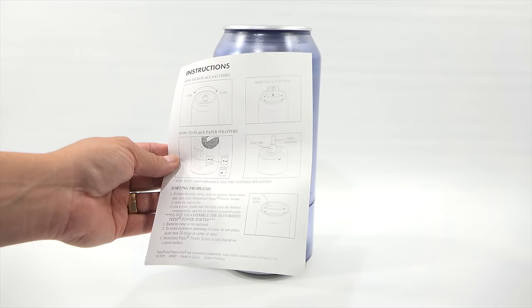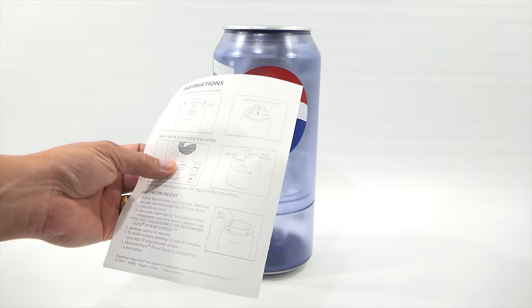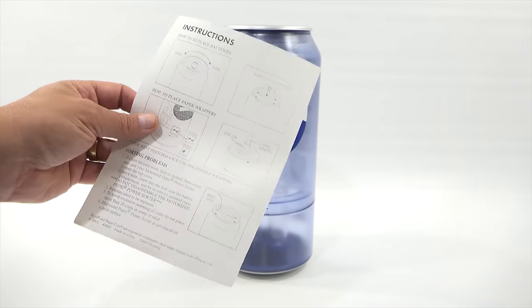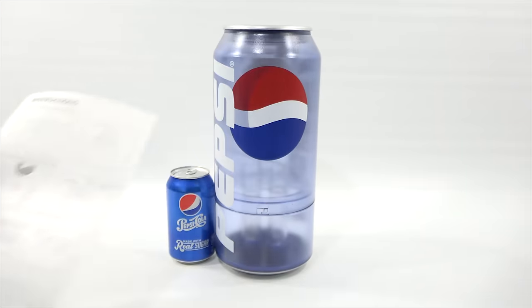How to open and close. Insert two AA batteries. I'll show you that. How to lock it. And then put your coin tube in. Paper wrapper. See, it shows you to put your paper wrapper in there. And then if there's sorting problems.